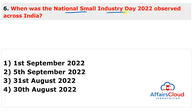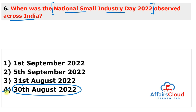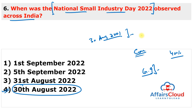National Small Industry Day 2022 was observed across India on 30th August 2022 to recognize the importance and contribution of small-scale businesses in India. The small sector plays a key role as a major growth indicator in the Indian economy, contributing around 40% of the gross industrial value. The first observance was on 30th August 2001, when the ministry organized a convention for entrepreneurs in small-scale industries in New Delhi along with award distribution.